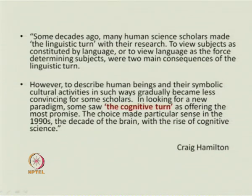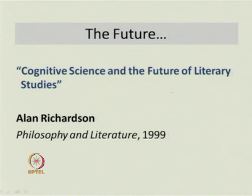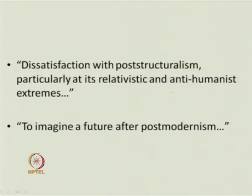Alan Richardson, in the journal Philosophy and Literature in 1999 — at the end of the decade of the brain — talks about the future of literary studies in terms of cognitive science. Richardson suggests that the future of literary studies perhaps lies in cognitive approaches to the text and to the author. He says that the rise of cognitive studies or cognitive approaches to literary texts may have arisen from a dissatisfaction with poststructuralism, particularly its relativistic and anti-humanist extremes.